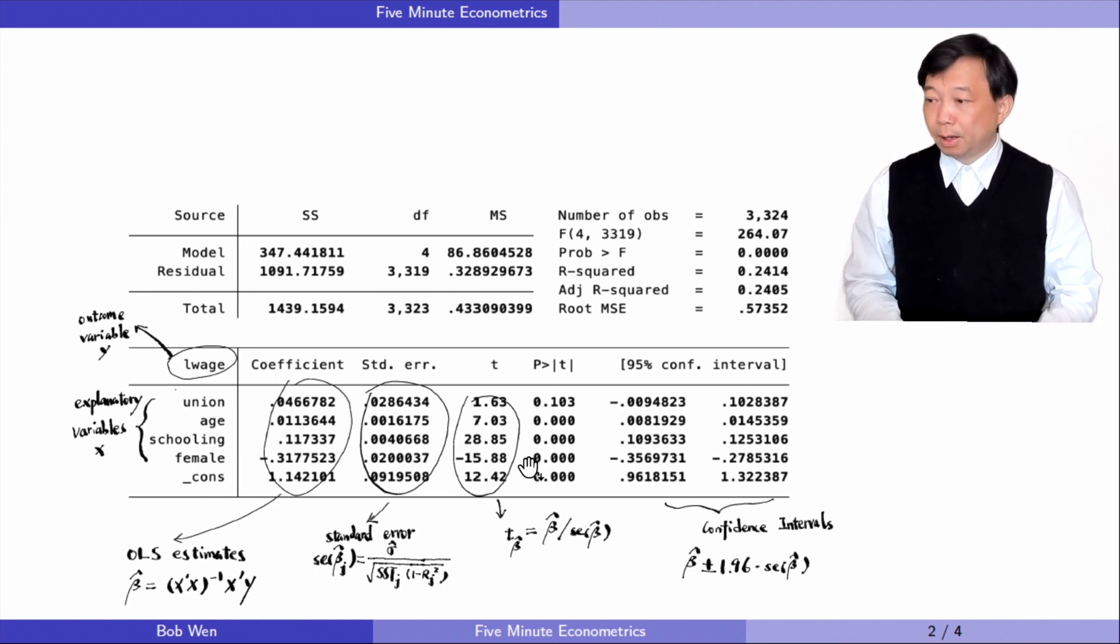The last two columns are for the 95% confidence intervals. For the union variable, zero is inside its 95% confidence interval. This means union membership has no statistically significant effect on wages at the 5% level against a two-sided alternative. In fact, from its p-value, we know that it is even insignificant at the 10% level. The 95% confidence intervals for other explanatory variables exclude zero, implying they are all significant at the 5% significance level.